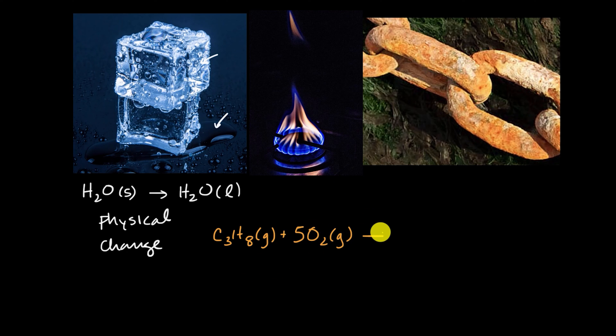And then when it combusts, you're going to produce three, for every one mole of propane and five moles of molecular oxygen, you're going to produce three moles of carbon dioxide gas, and four moles of water in vapor form as well. And so what you actually have is the bonds in those molecules are actually breaking and then reforming. So you don't just have physical change going on here, you have chemical change.